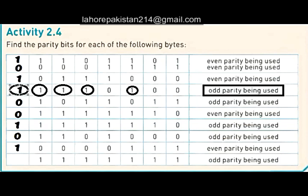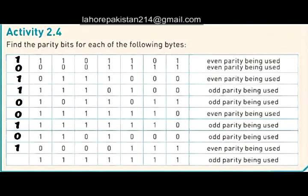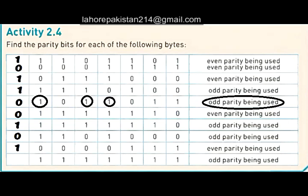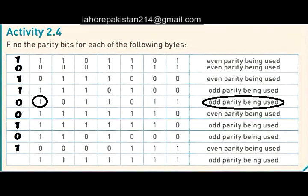In the next part, the parity required is odd. Counting the number of ones: one, two, three, four, five — which is already odd. We do not need to add one, so we have added a zero in the beginning.